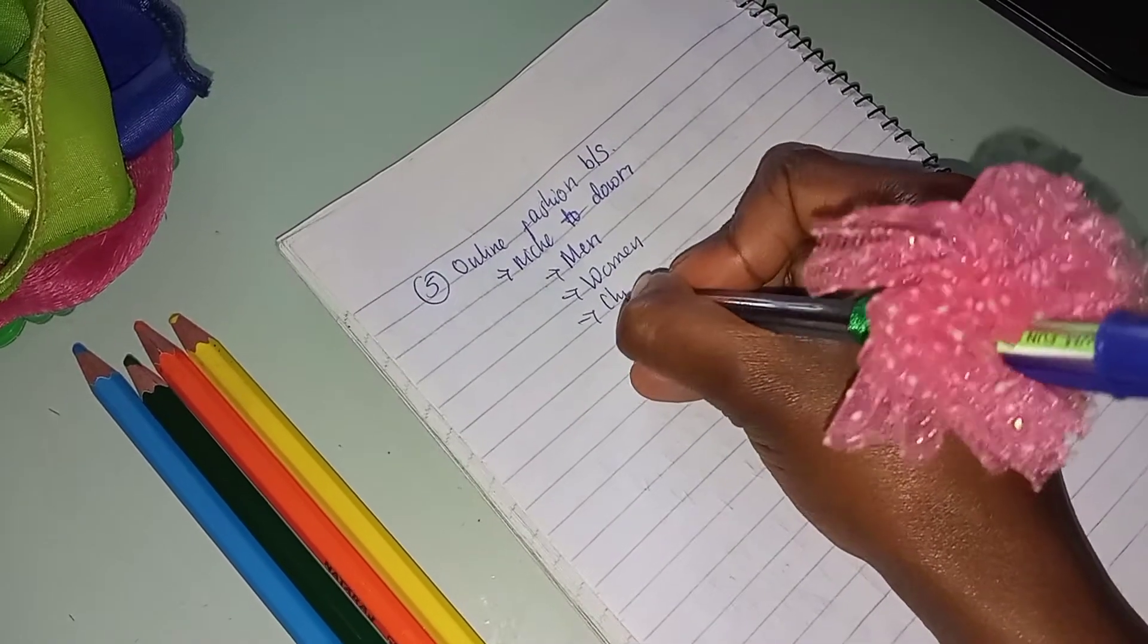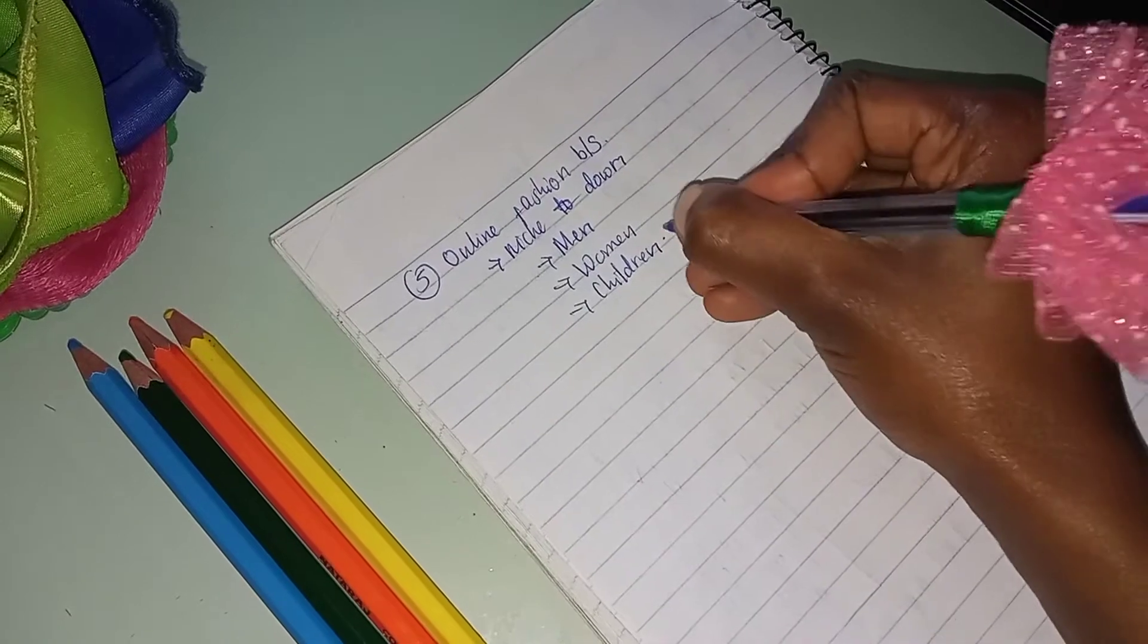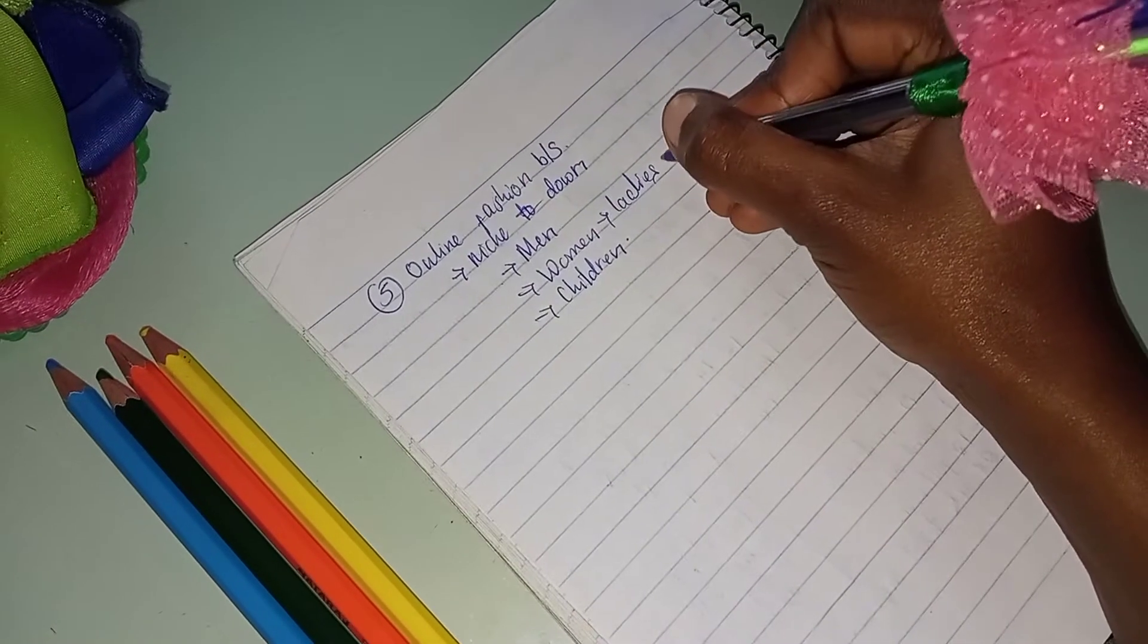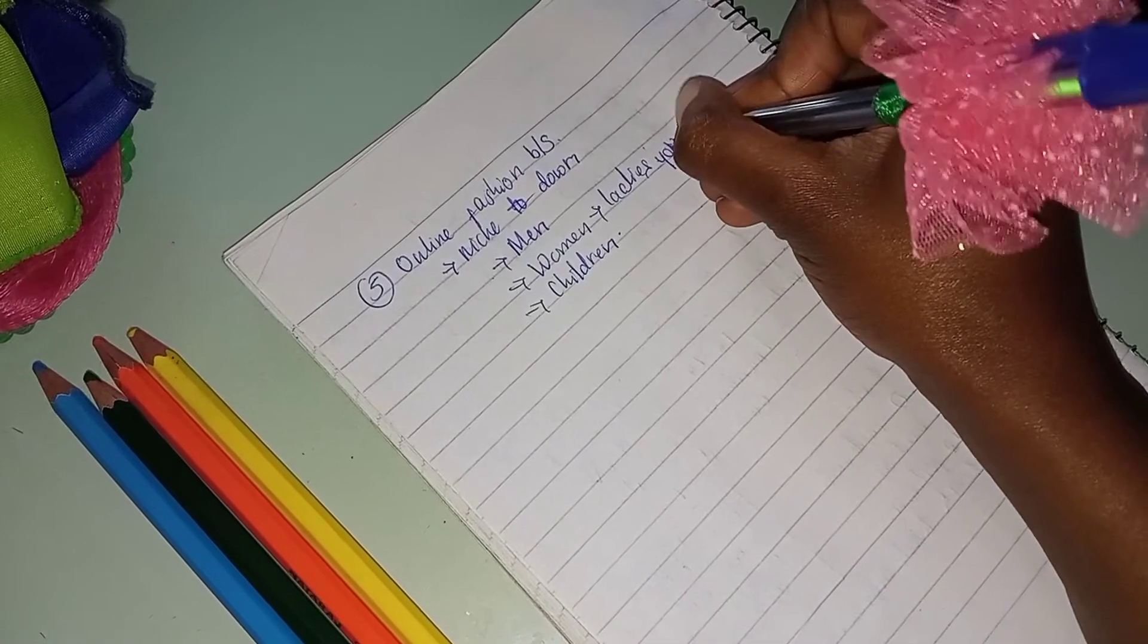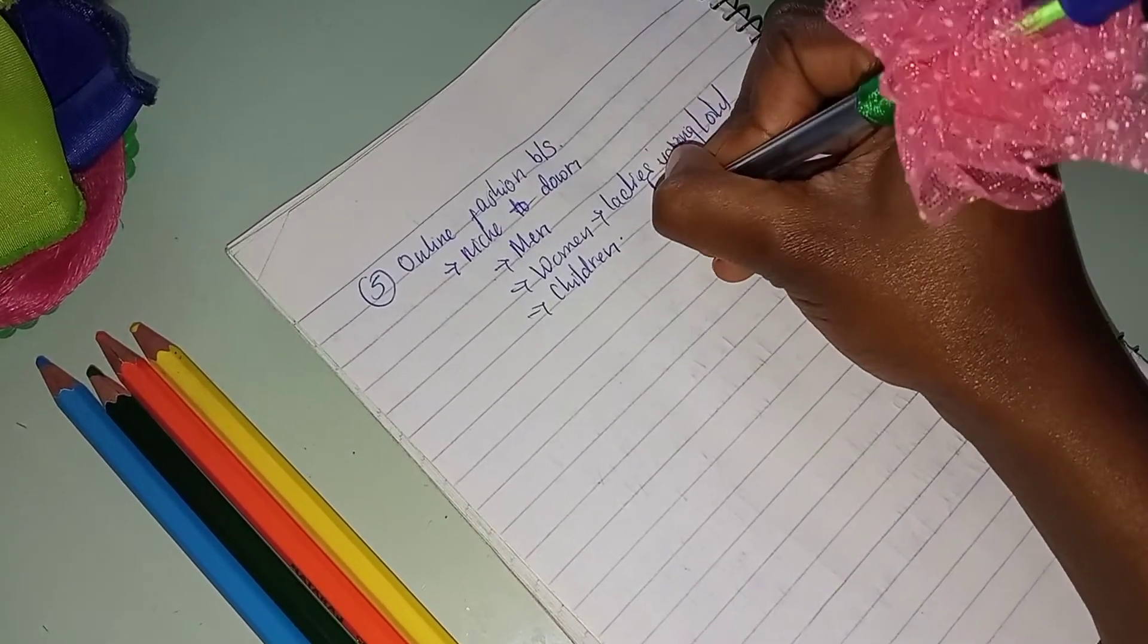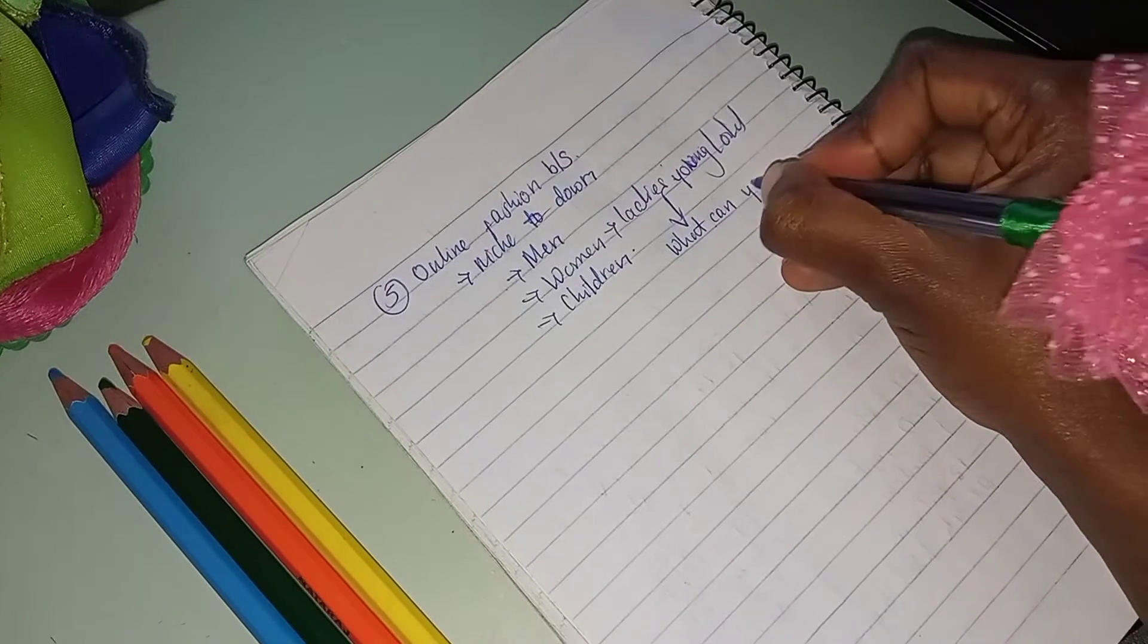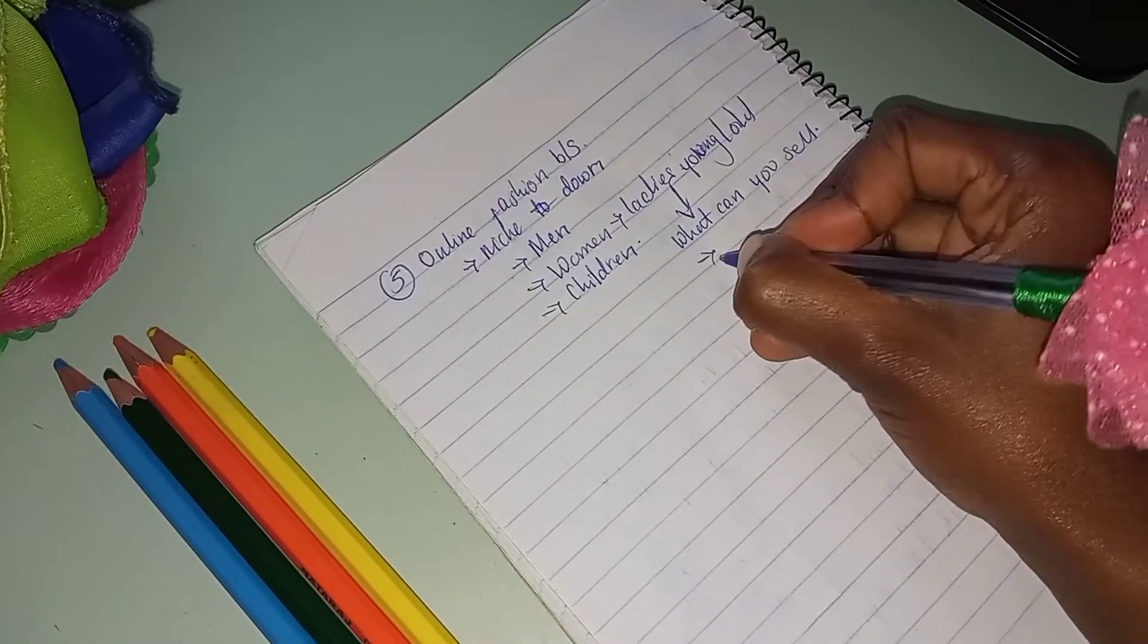For women, there's a wide array of things that you can sell. We can categorize into three groups: ladies, young adults, or old women. What can you sell in this category? We can have shoes, sporty wear or chunky heels or jelly shoes.